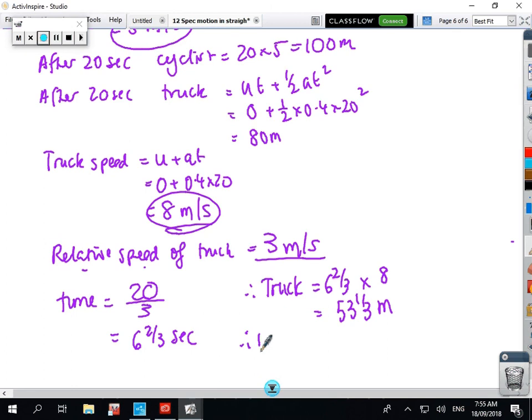So the total distance for the truck will be 80 plus 53 and a third. So the truck has gone 133 and a third metres, all up. Okay, and so has the bike. The bikes are at the same spot when they catch up. Okay, so there'll be an exercise on Moodle for that one. Okay, bye.